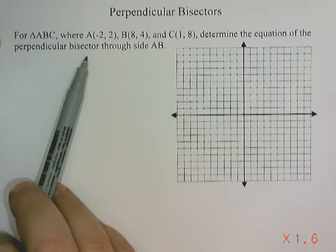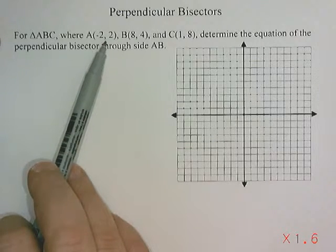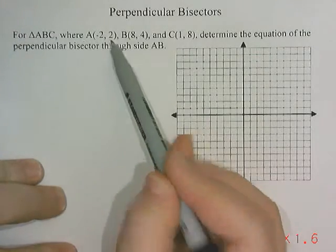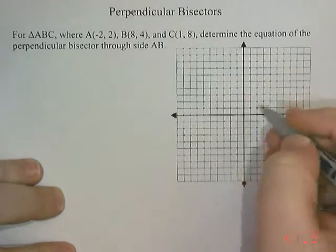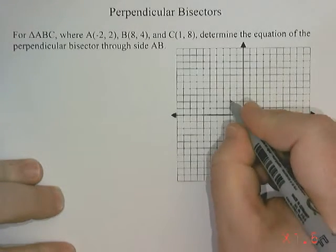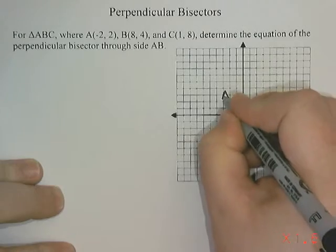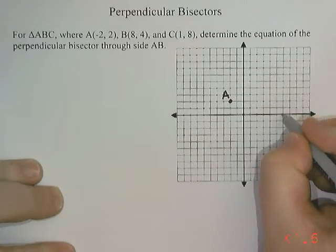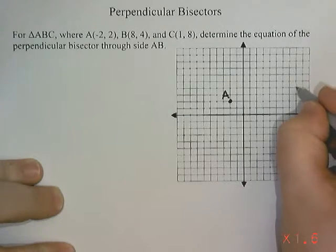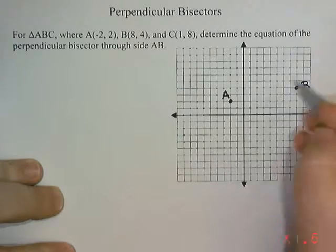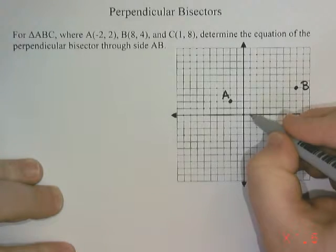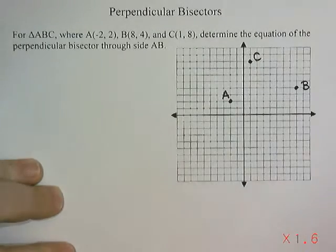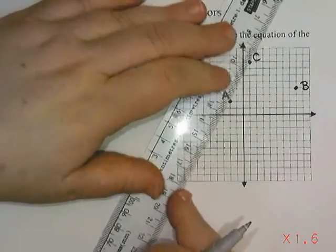Before we talk about what a perpendicular bisector is, the first thing I'm going to do is plot points A, B, and C on my grid. Point A is negative 2 and 2, so we find negative 2 on the x-axis and positive 2 on the y-axis. B is 8 and 4, so I find 8 on the x-axis and 4 on the y-axis. And C is 1 and 8, so 1 on the x-axis and 8 on the y-axis. Then I'll take my ruler and connect those points to make a triangle.